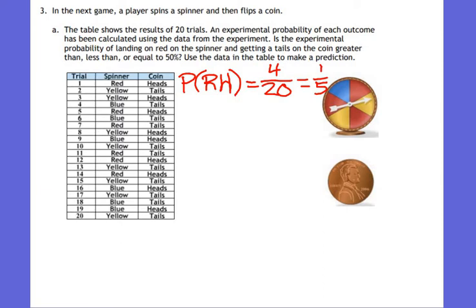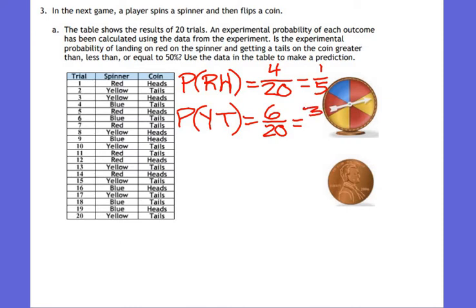What's something else that could happen? It could land on yellow tails. How many total outcomes? Twenty. How many times did it land on yellow tails? Six. 6/20 simplifies to 3/10.